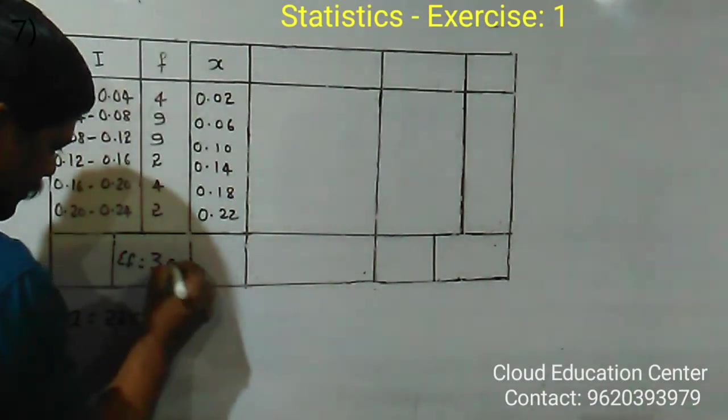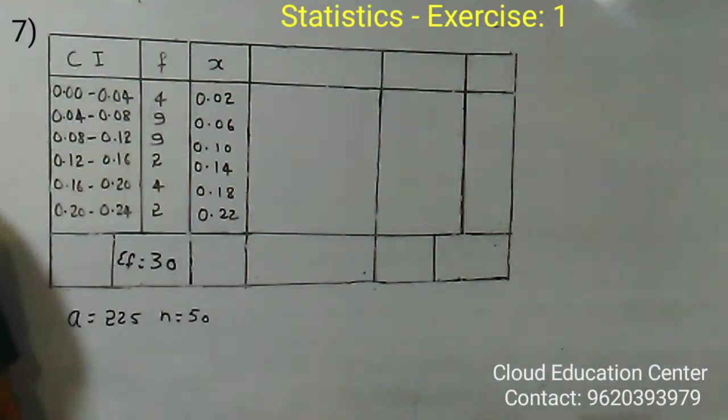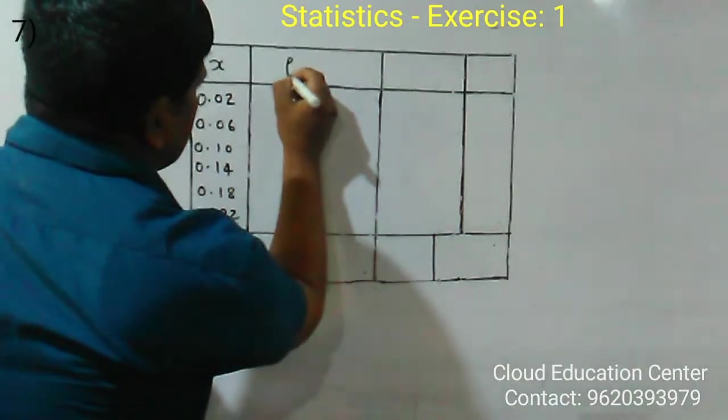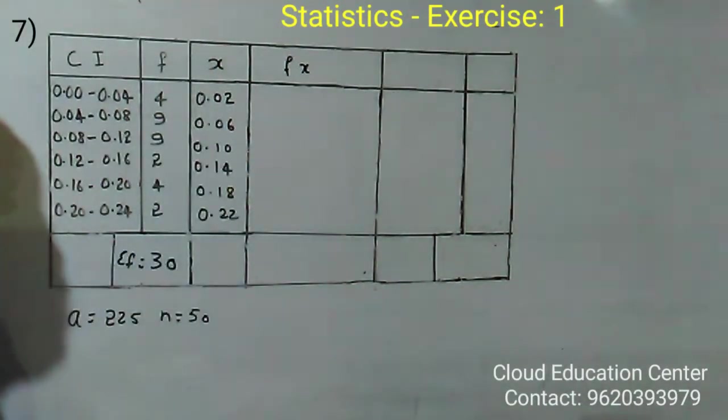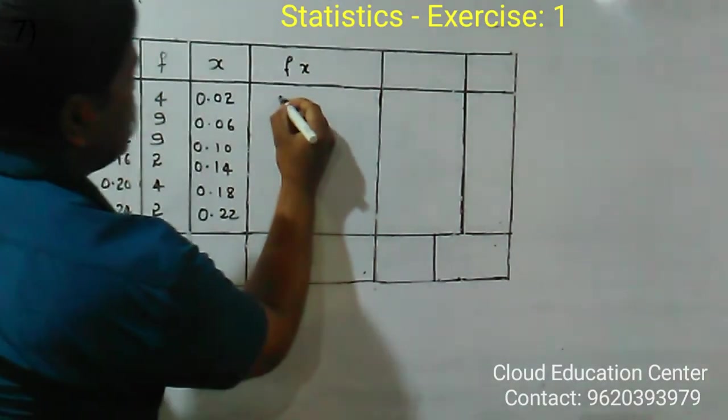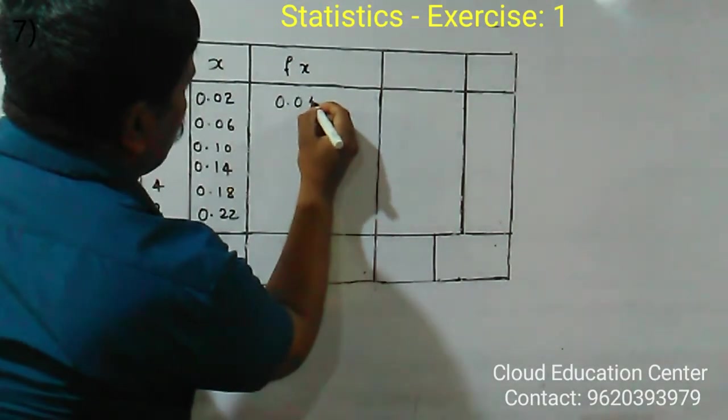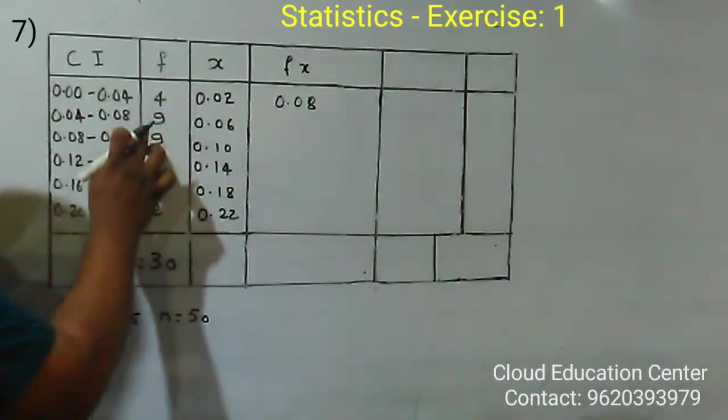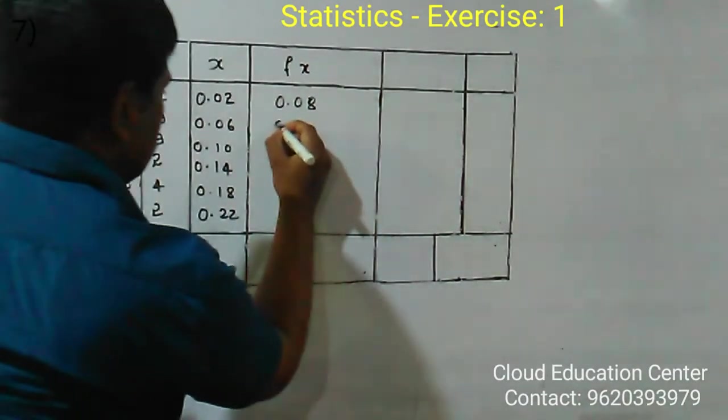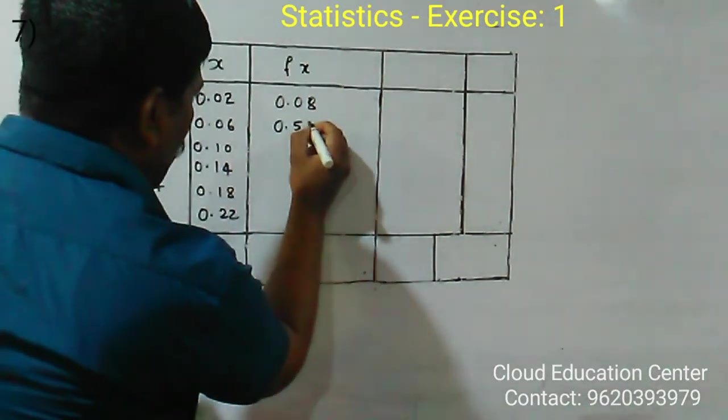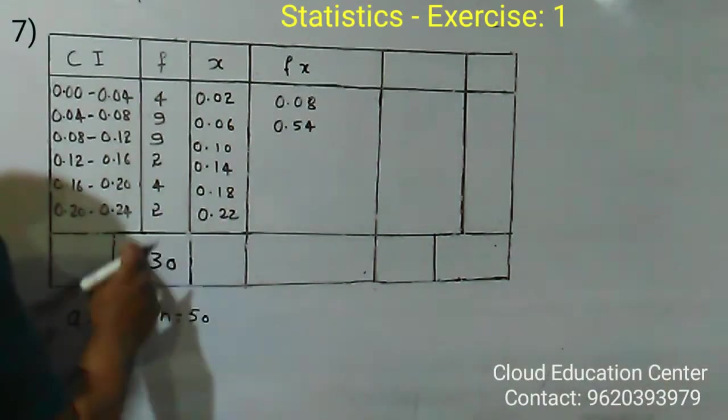Sigma F equals 30. Using the direct method, calculate F times X. 4 times 0.02 equals 0.08, and 9 times 0.06 equals 0.54, and 9 times 0.10 equals 0.90.